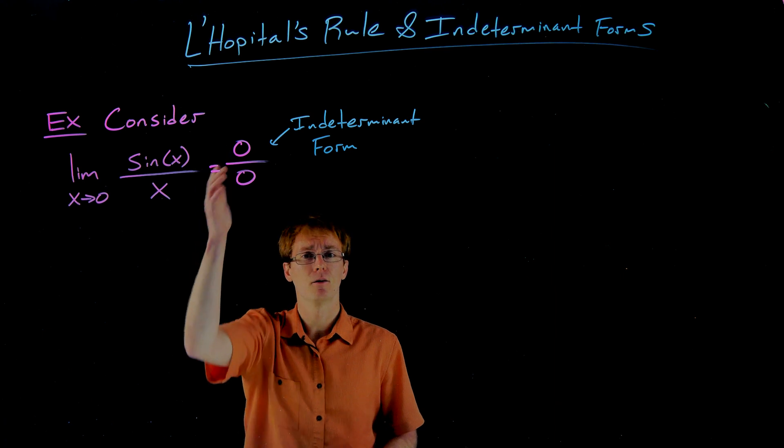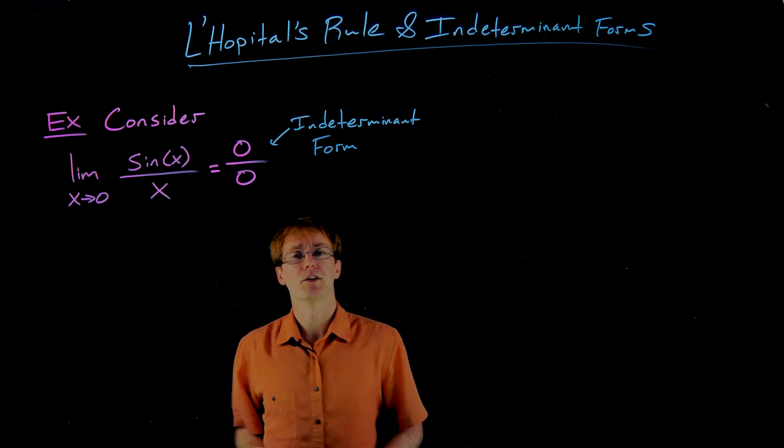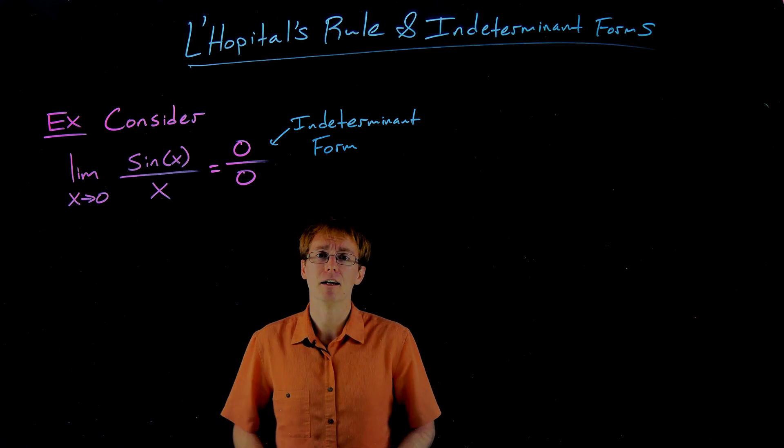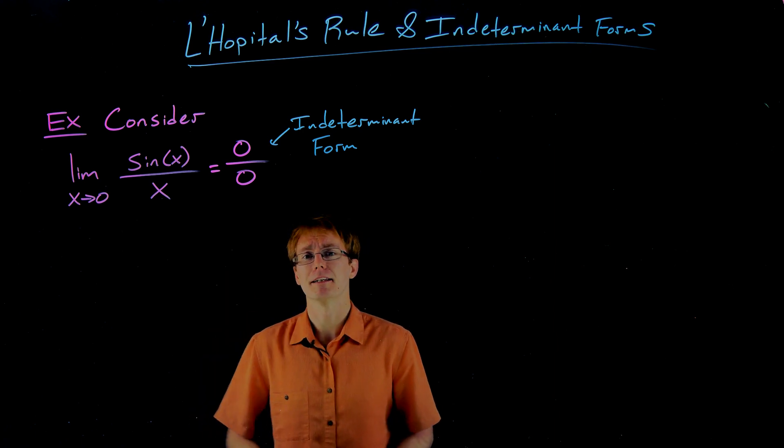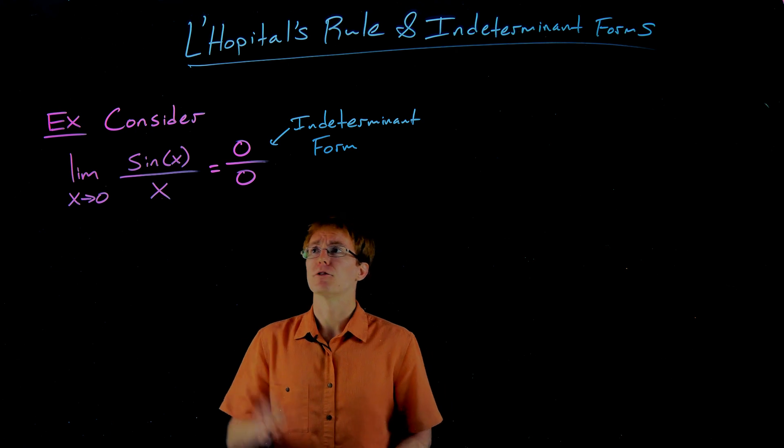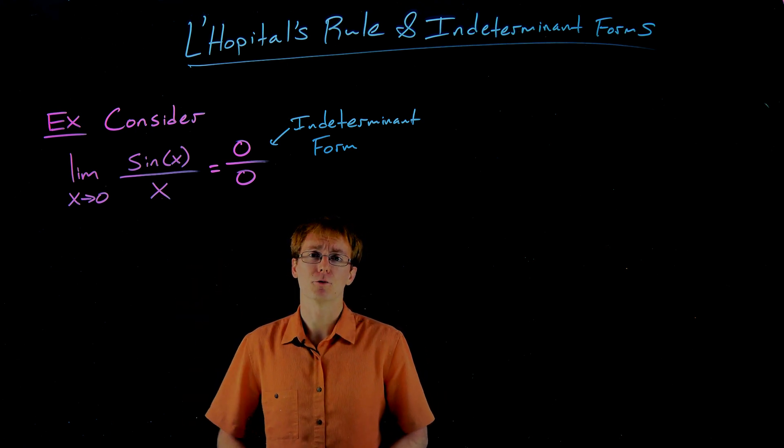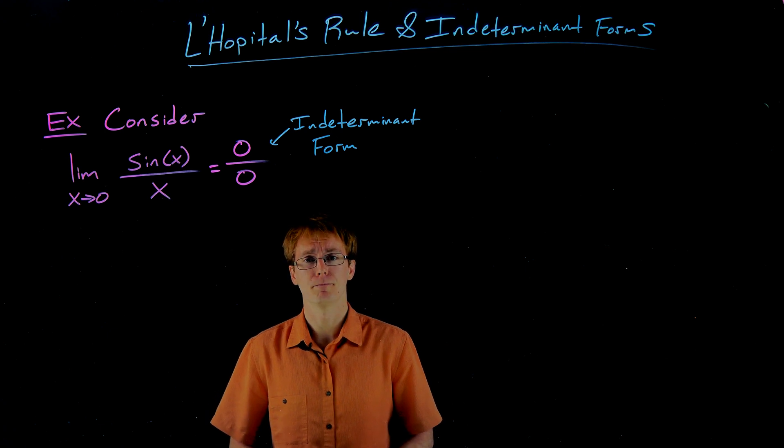The numerator kind of tells us, well everything's gonna get zeroed out, while the denominator tells us everything's gonna blow up towards positive or negative infinity, and what actually happens could be either of those or something entirely different. So to kind of resolve this issue, to evaluate this indeterminate form, we have to use what is called L'Hopital's rule.